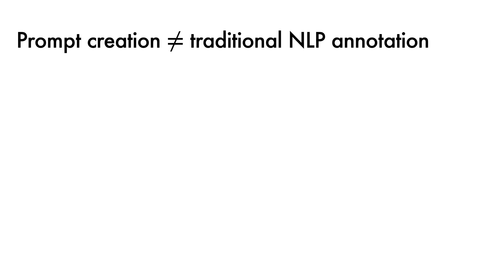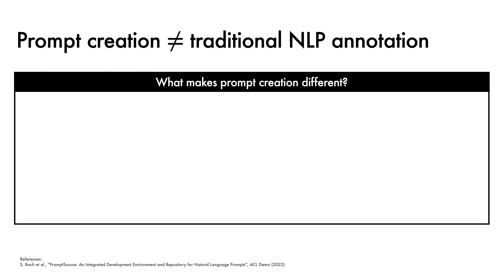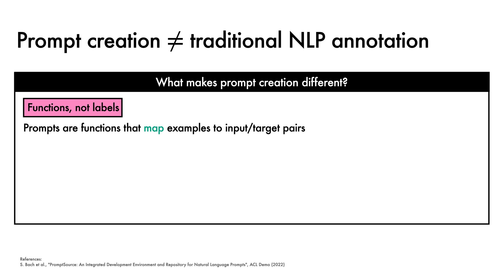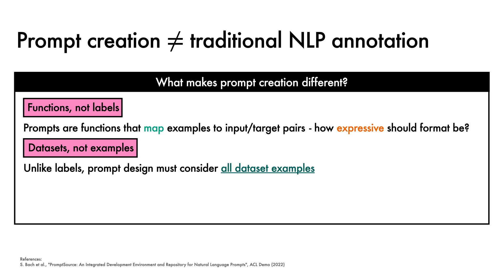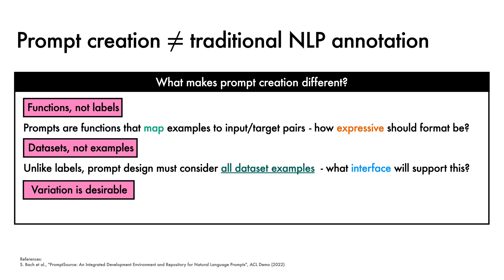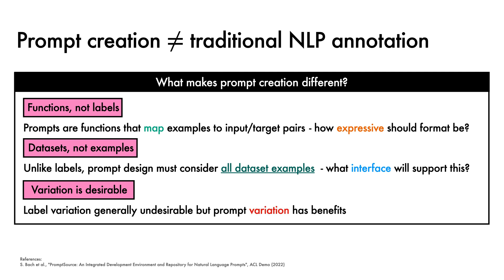When designing a tool to support prompt creation, it's worth considering what makes this different from traditional NLP annotation processes. First, prompts are functions, not labels — they map examples to natural language pairs of inputs and targets. Given this potentially high level of flexibility, it's not immediately obvious how expressive the prompt templating format should be. Second, prompts work at the level of datasets rather than individual examples, and consequently prompt designers must consider all dataset examples in the creation process. Third, prompt variation is often desirable since different prompts can induce different behaviour, a situation quite unlike traditional NLP annotation, in which disagreements between annotators are something of a nuisance.